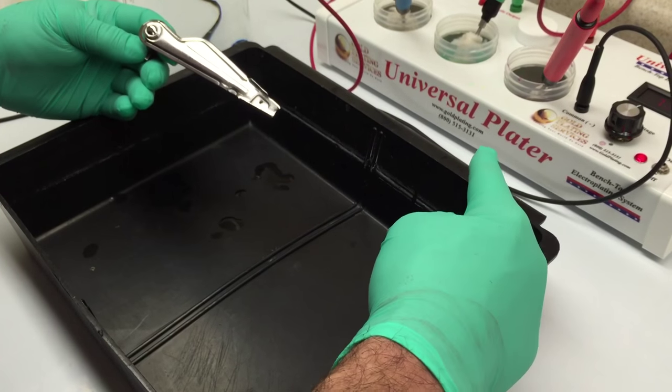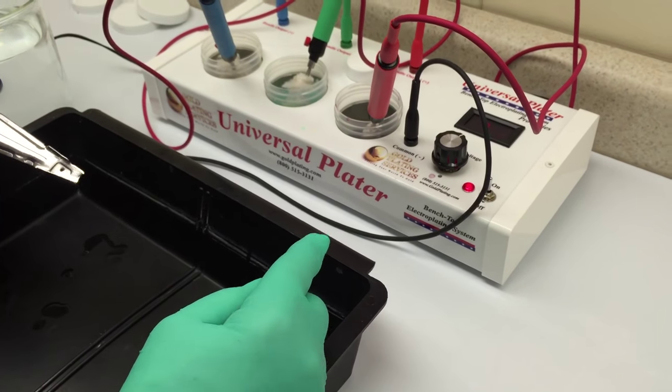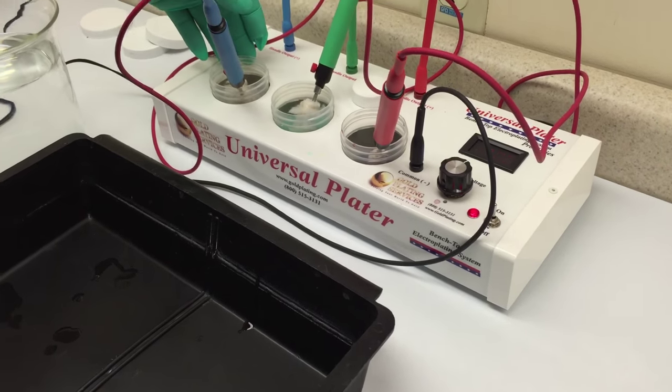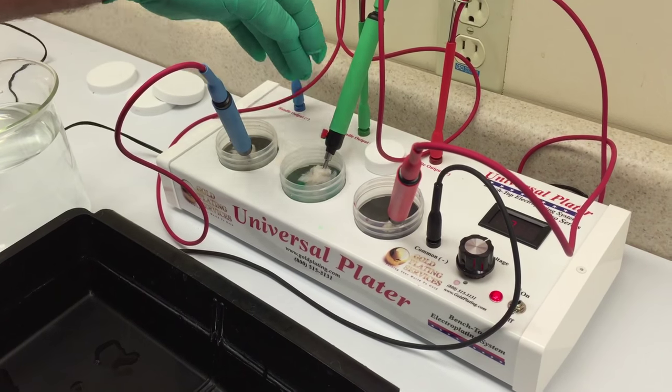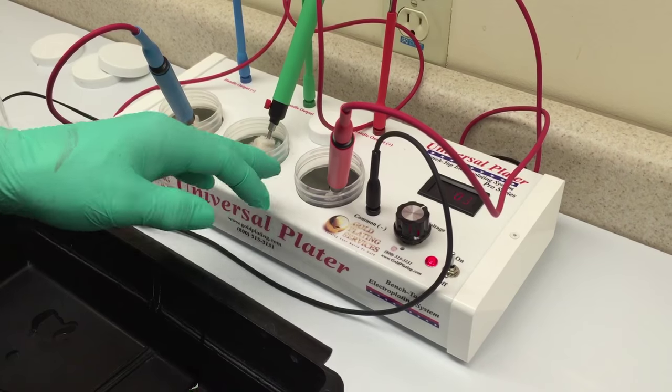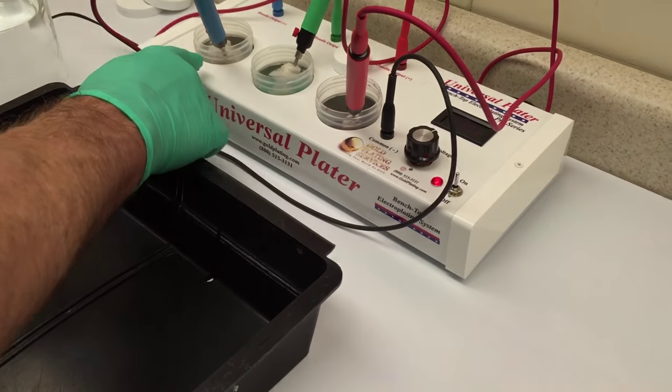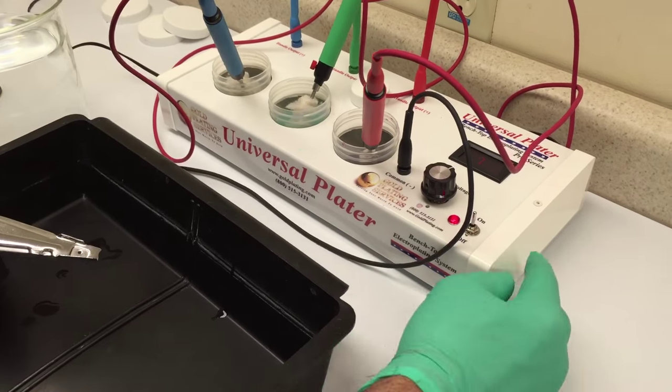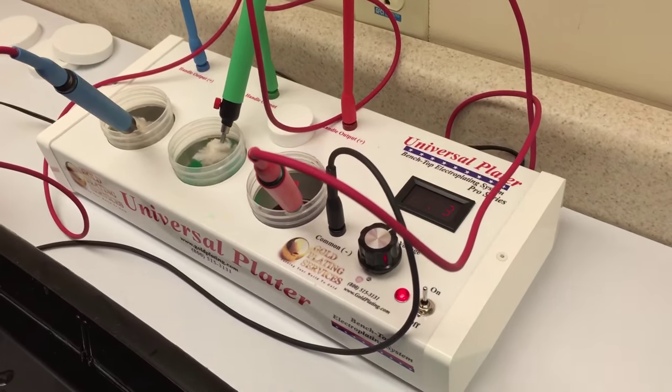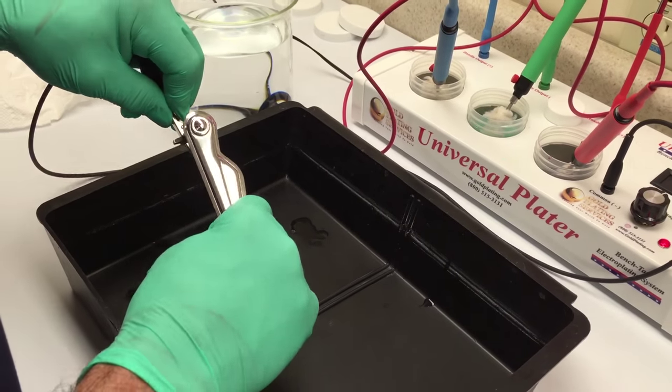Now I'm going to use the universal plater, and it's set up for plating onto mild steel right now with an electro clean solution in the first beaker, a wood's nickel strike in the second beaker, and our gold solution in the third beaker. For the first two steps of pre-treatment, I've set the voltage at about seven, just a little over seven volts, and I think that'll be about right.